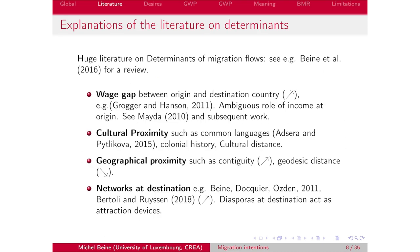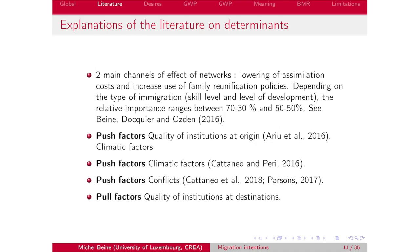There are other factors I won't emphasize too much, but as was mentioned, networks or diasporas act as attracting devices. There has been a huge literature on push and pull factors — factors specific to the origin and factors specific to the destination. Among push factors, there is a growing literature on the quality of institutions at origin, climatic factors, and conflicts.